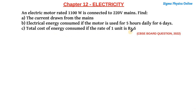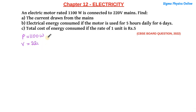Here we have an electric motor whose power is given as 1100 watts. So the power is 1100 watts, and the voltage to which this motor is connected is 220 volts. So the supply voltage is 220 volts. We have to find out first the current drawn from the mains, that is I.